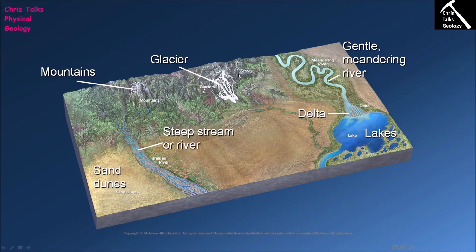The sediment that's being transported is moved around by various mediums. In the case of a glacier, sediment is moved by ice. In a desert, sediment is moved by wind. In mountainous terrains with landslides, sediment is primarily moved by gravity. And of course we also have sediment being moved by liquid water. So there are four mediums: water, ice, wind, and gravity.